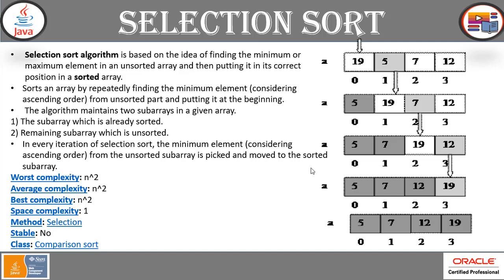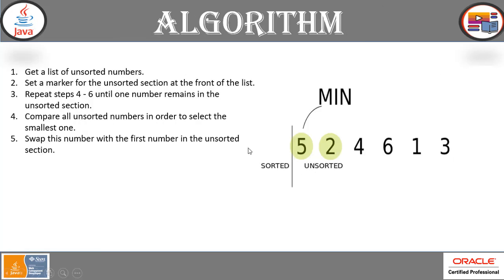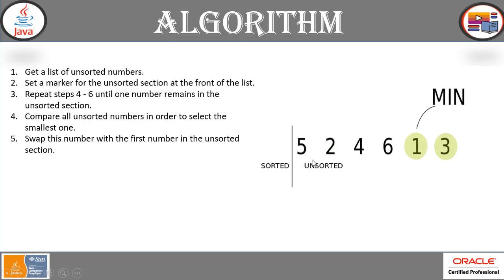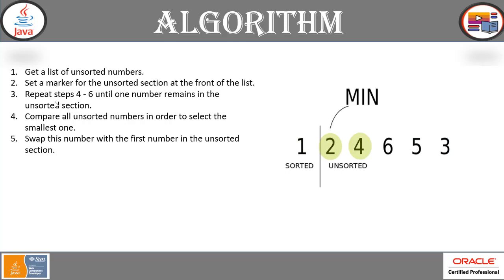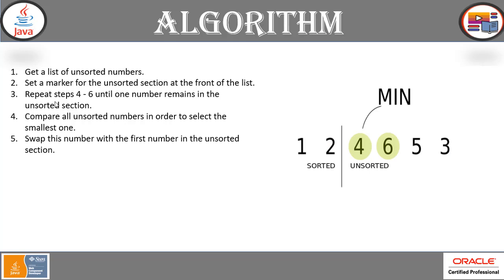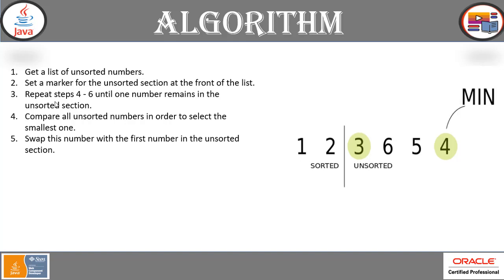For the implementation of selection sort, we have an unsorted array: 5, 2, 4, 6, 1, 3. One element is selected and comparison happens. The algorithm says: get a list of unsorted numbers, set a marker for the unsorted section at the front of the list, repeat until one number remains. Compare all unsorted numbers to select the smallest one and swap it with the first number in the unsorted section.